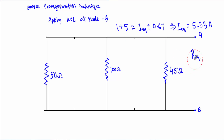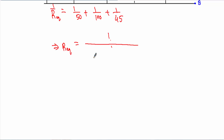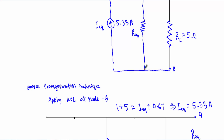To calculate R_equivalent, our circuit now has all resistances connected in parallel with respect to the A and B terminal. Therefore: 1/R_equivalent equals 1/50 plus 1/50 plus 1/100 plus 1/100 plus 1/45 ohm, which gives R_equivalent equal to 1 divided by 0.0052, equal to 19.14 ohm. So R_equivalent has a value of 19.14 ohm.